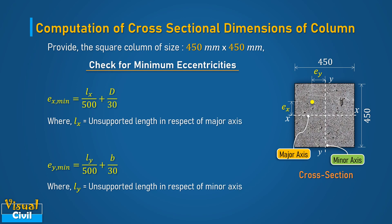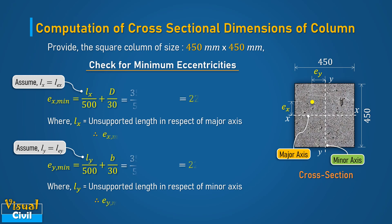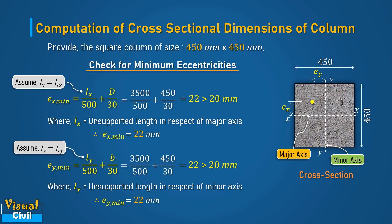In the problem statement, the effective length is given and restrained condition is not mentioned. Hence, consider the values of unsupported length LX and LY equal to the effective length, that is 3500 mm. After computation, both the eccentricities equal to 22 mm, which is more than the minimum value of 20 mm.